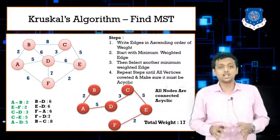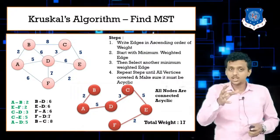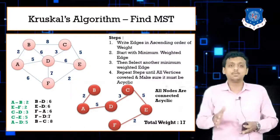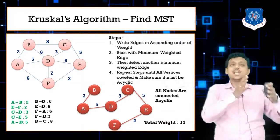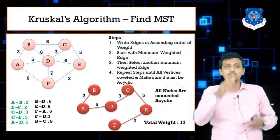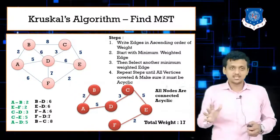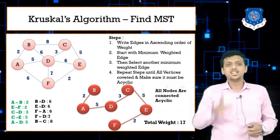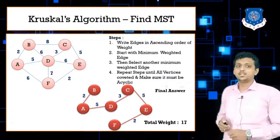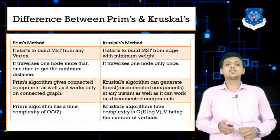The key difference: in Prim's you start with a node, but in Kruskal's you start with the edge of minimum weight. In Prim's you select adjacent edges of a node with minimum weight, while in Kruskal's you select random edges with minimum weight. Let me now explain these differences more clearly.